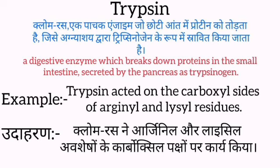Trypsin ka arth hai clomerus. Ye ek paachak enzyme hai, jo chhoti aat mein protein ko todta hai. Jise aganyashe dwara trypsinogen ke roop mein sthravit kiya jata hai.